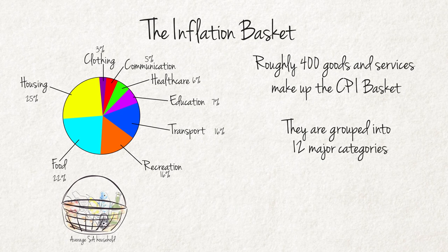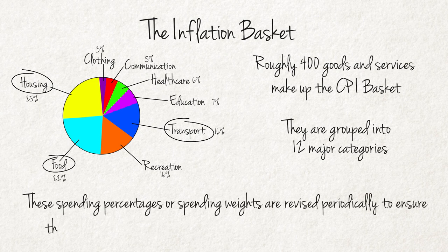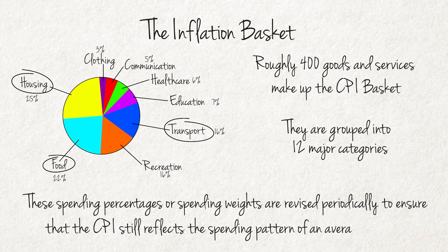Typical heavy-weighted categories include housing and utility costs, spending on food and non-alcoholic beverages, as well as transport costs. These spending weights are revised periodically to ensure that the CPI still reflects the spending pattern of an average household. These revisions also allow for the inclusion of new products and services that did not exist before — for instance, cell phone expenditure at the time of its introduction — as well as the exclusion of products no longer generally used, for instance video cassette recorders.